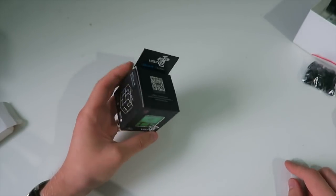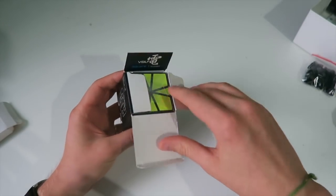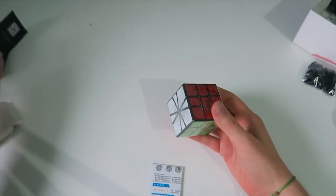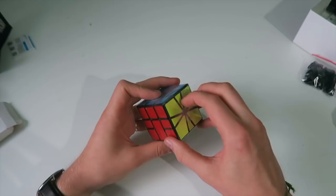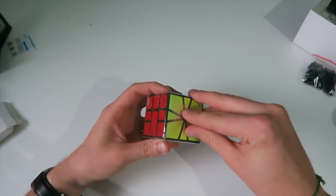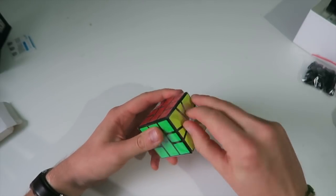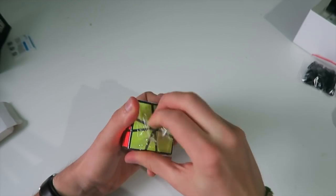And now my arch nemesis and possibly one of my least favorite puzzles in the world, even though I kind of love hating it, the Square-1. I've been trying to learn how to solve Square-1 basically since I started cubing and I've not been able to do that yet. So this is it.